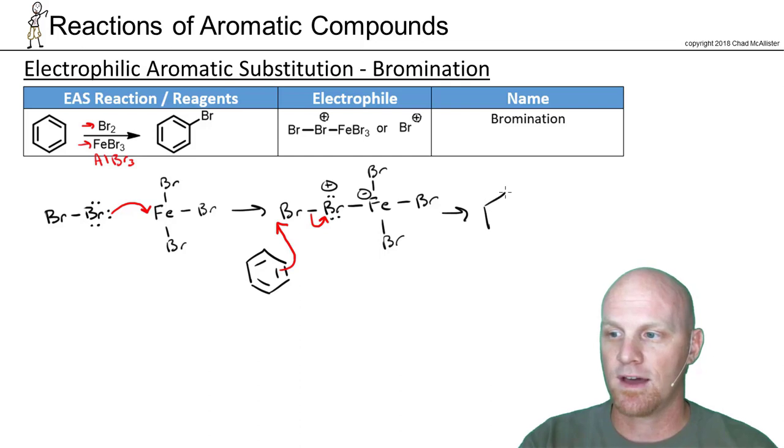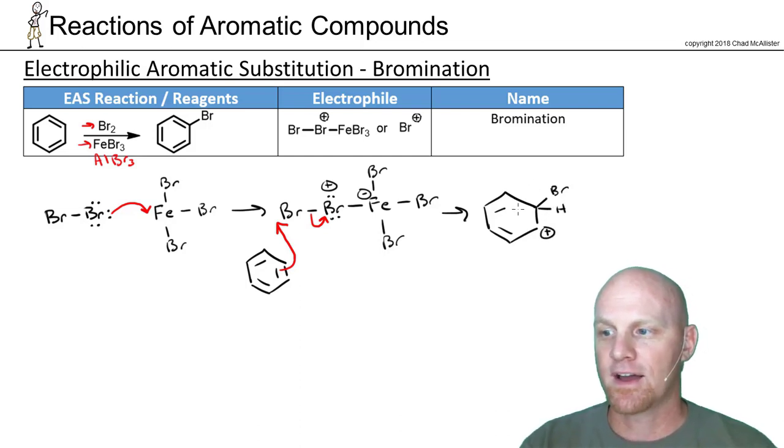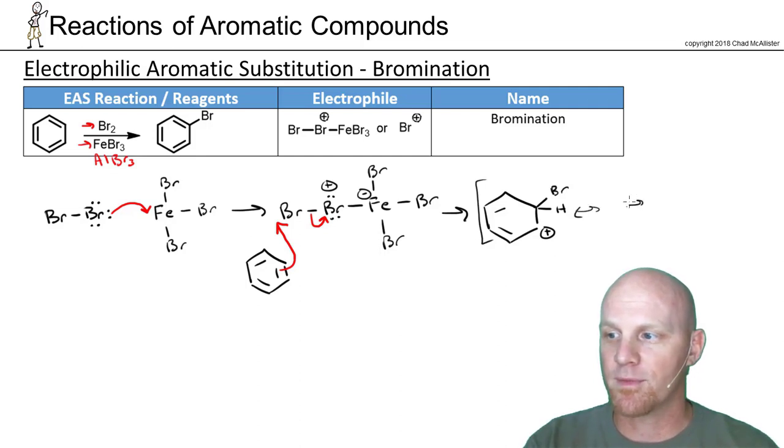If we look at what we've got here, our intermediate here, we've now attached one bromine, and we've got our carbocation. That carbocation is going to be stabilized by a bunch of resonance structures. I'm not going to draw them all out, I'm just going to get lazy here. We're also going to have formed FeBr4-.